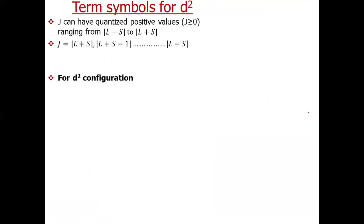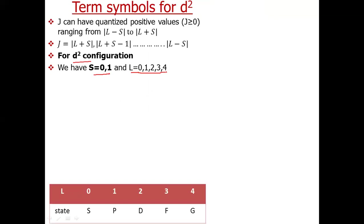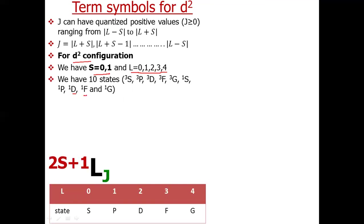Similarly, for D2 configuration we know S can be 0 or 1, and L can have values 0, 1, 2, 3, and 4 as discussed earlier. Without considering J, when S = 0 we have states 1S, 1P, 1D, 1F, and 1G, and when S = 1 we have 3S, 3P, 3D, 3F, and 3G, giving 10 states total.